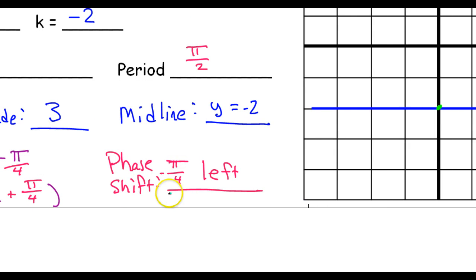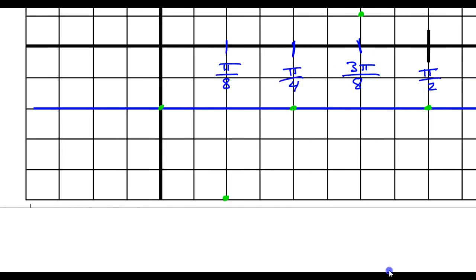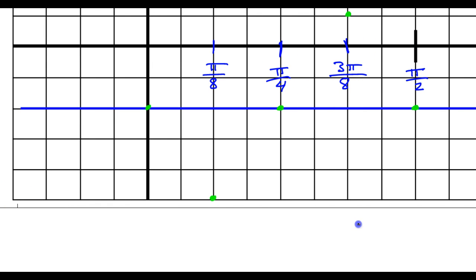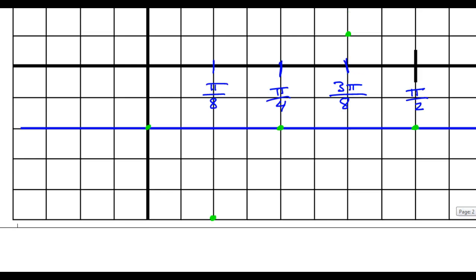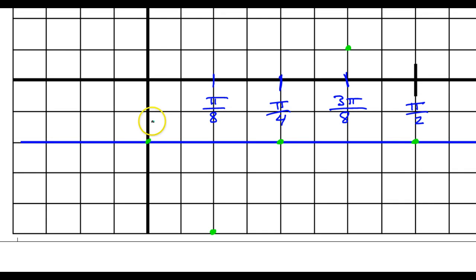π over 4. Left π over 4. In this particular graph, how big is π over 4? How many squares is that? Can you see that π over 4 is right here? That's 4 squares. So, I need to move every single one of these points 4 squares to the left.